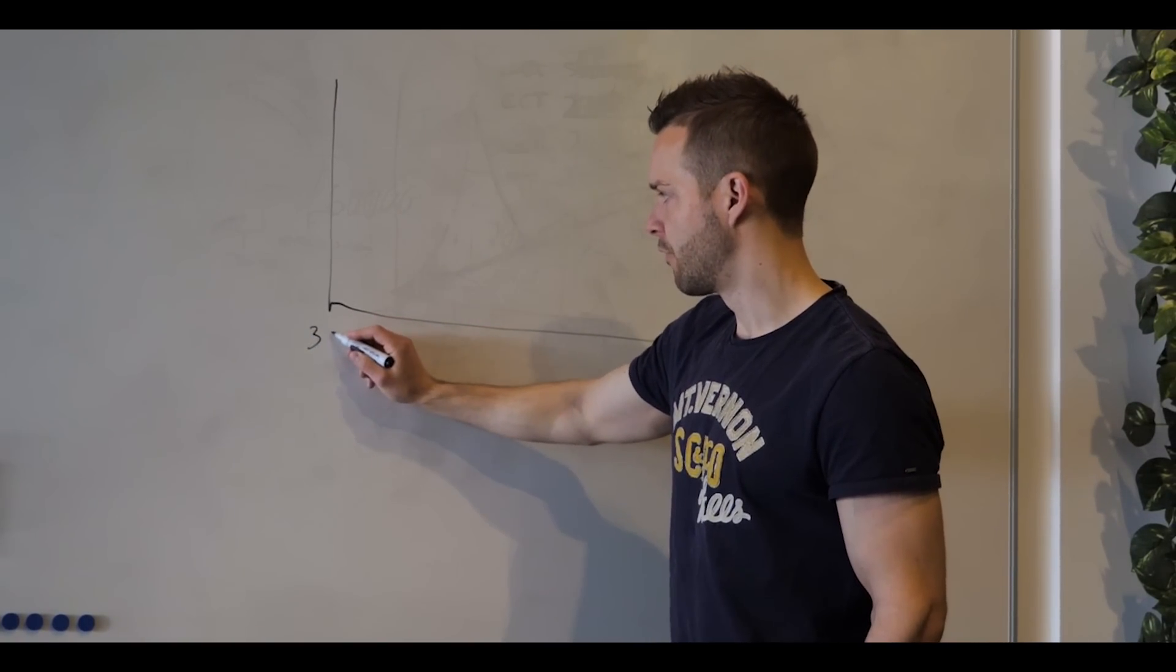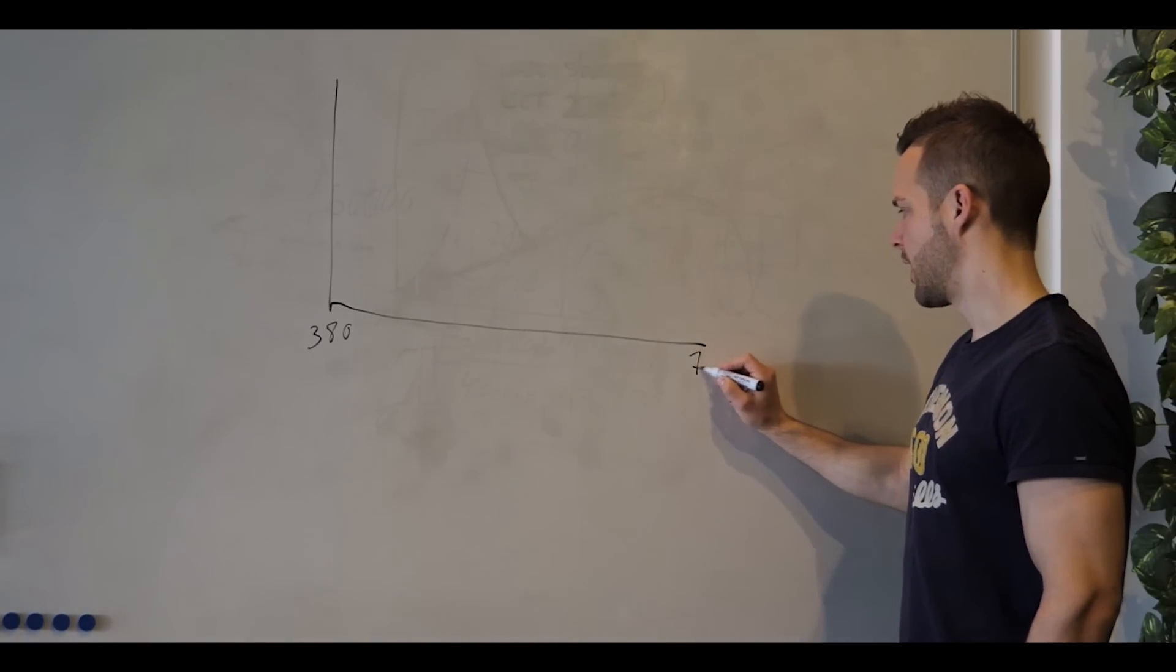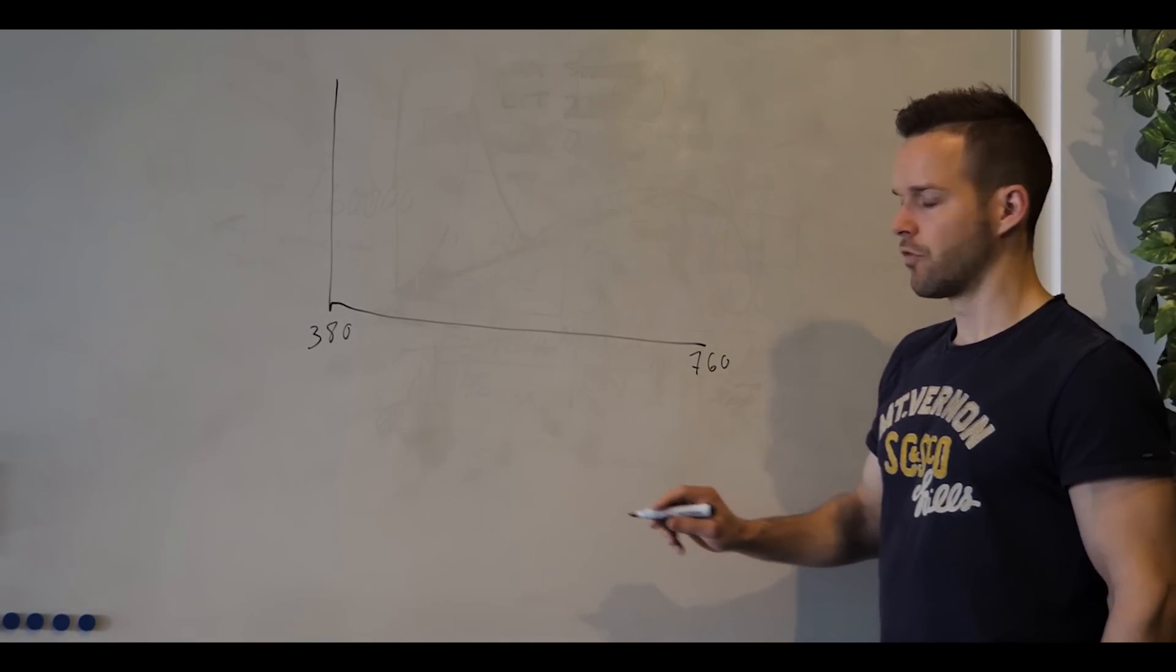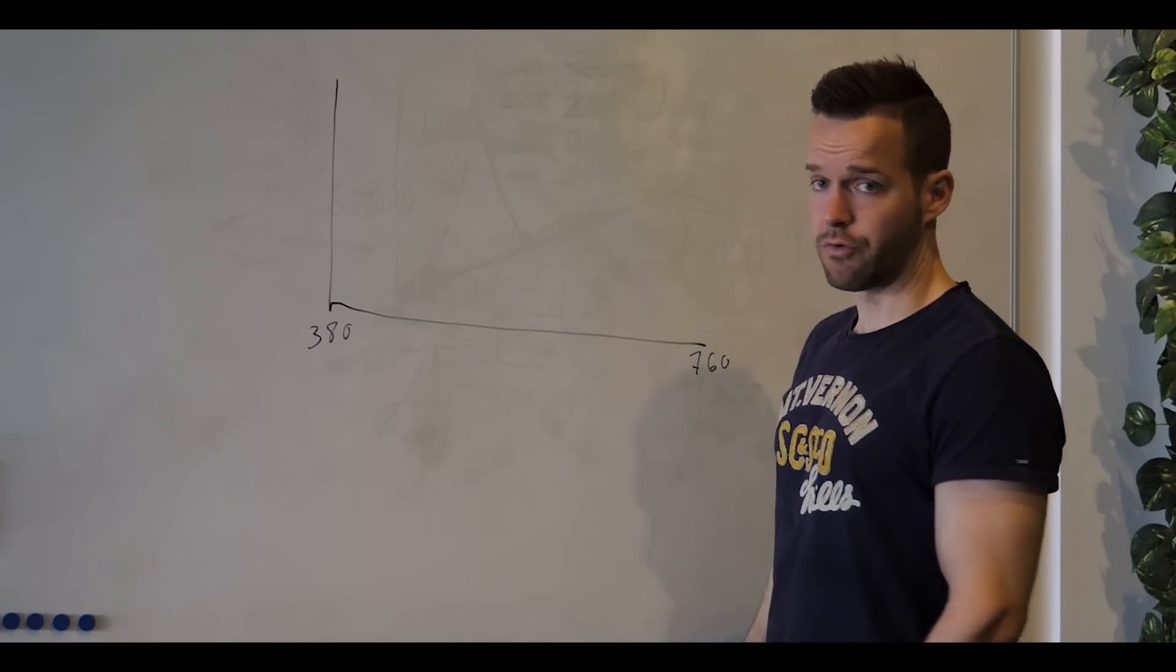And you have from here 380 nanometers to 760 nanometers. So in between these nanometers, you have a thousand, I would say a million different colors.